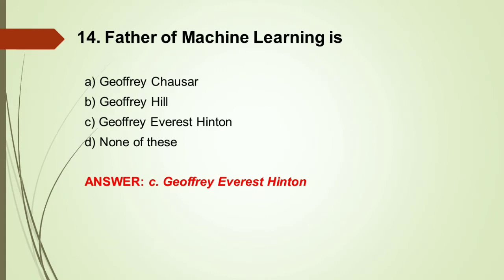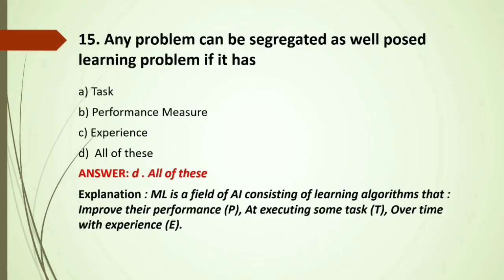MCQ: The father of machine learning is — A) Jeffrey Chaucer; B) Jeffrey Hill; C) Jeffrey Everest Hinton; D) None of these. MCQ: Any problem can be segregated as a well-posed learning problem if it has — A) Task; B) Performance measure; C) Experience; D) All of these. The well-posed learning problem consists of all three: task, performance measure, and experience. Answer: All of these.